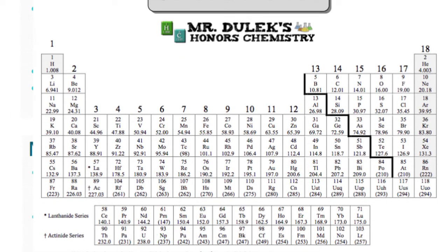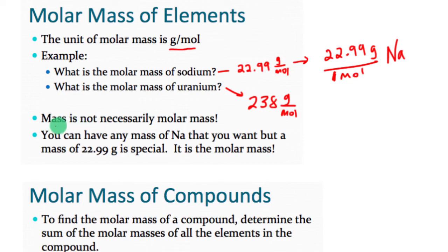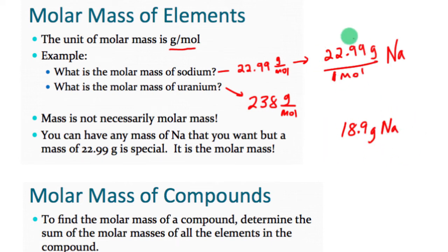For uranium, found at the bottom of the periodic table at 238, the molar mass is 238 grams per mole — meaning for every Avogadro's number of uranium atoms, the mass is 238 grams. Keep in mind this is a special number: you can have any mass of sodium, like 18.9 grams, but that is not the molar mass. The only number considered the molar mass for sodium is 22.99 — that's unique to sodium and makes it equivalent to one mole.